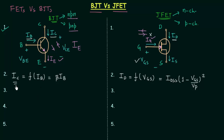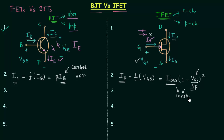In case of BJT, IC is dependent on the base current IB, so the control variable is the base current. On the other hand, in case of JFET the output current ID is dependent on voltage VGS — since IDSS and VP are constants, VGS is the control variable. Because of this we call BJT a current-controlled device, and we call JFET a voltage-controlled device.